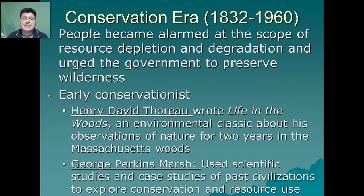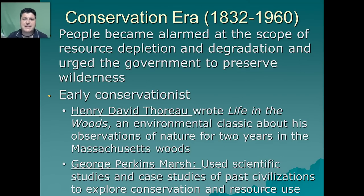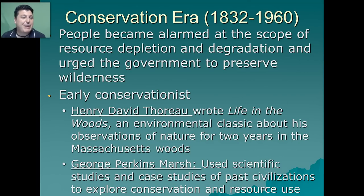Around 1832 to 1870, many people became alarmed at the scope of resource depletion and degradation that had occurred during the frontier era, and they urged the government to preserve the wilderness. Some of the early conservationists include Henry David Thoreau and George Perkins Marsh. Henry David Thoreau went and built a cabin along the banks of Walden Pond in Massachusetts and, as a result, wrote an environmental classic called Life in the Woods. George Perkins Marsh is probably the very first environmental scientist, using scientific studies and case studies of past civilizations to explore conservation and resource use.